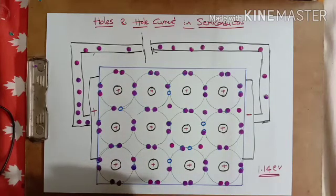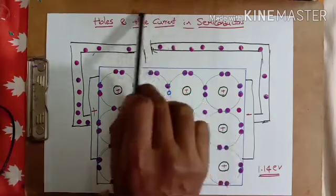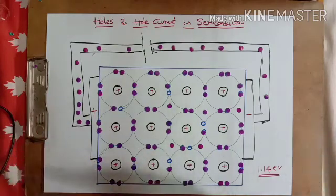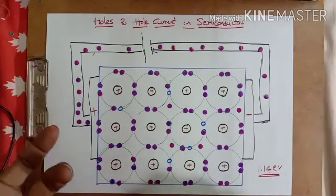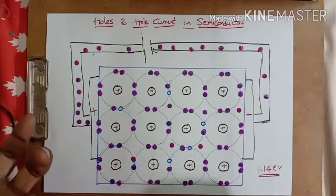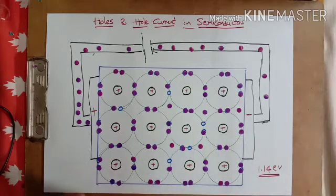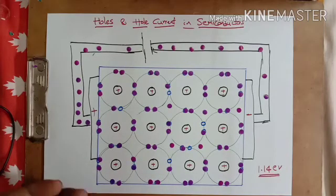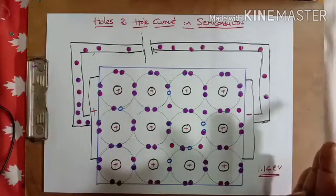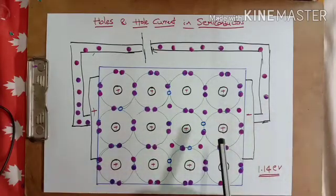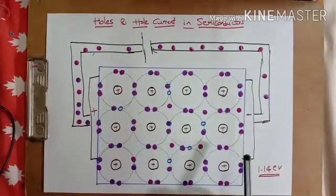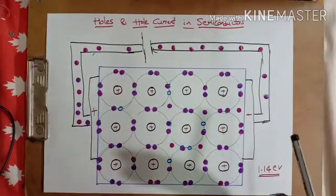We call this the hole current, but actually the hole is a hypothetical particle — it's just a vacancy. A vacancy by itself cannot carry current; the actual current is due to the movement of electrons in the valence band filling those gaps. It appears as though holes are moving from the positive plate to the negative plate.